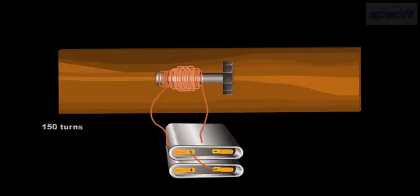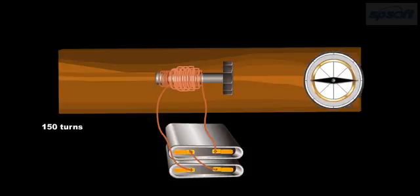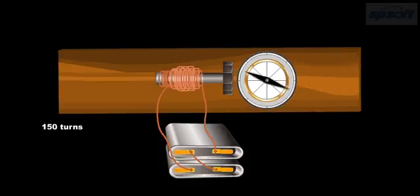Connect the terminals of the coil of 150 turns to the two dry cells. The iron core will become a magnet. Now place a compass near the bolt. The compass will show a deflection.